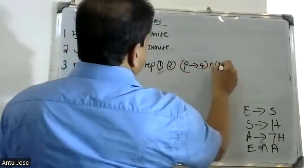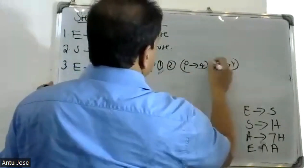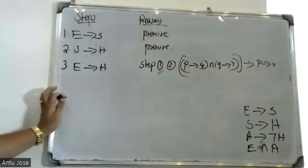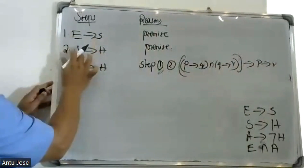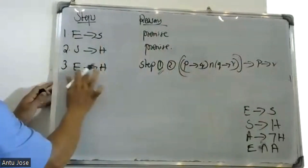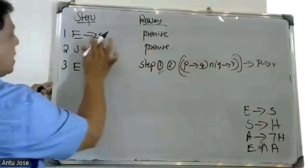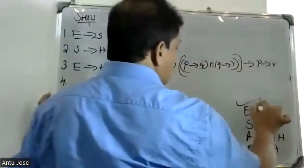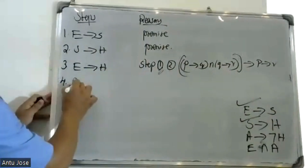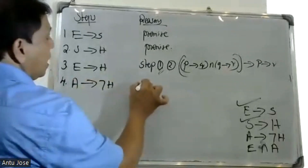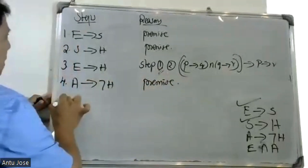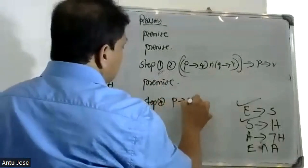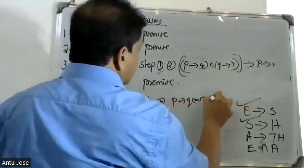p conditional q and q conditional r gives p conditional r. E conditional S, S conditional H, therefore E conditional H. By hypothetical syllogism: E conditional H. Now applying contrapositive: p conditional q equals negation q conditional negation p.